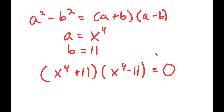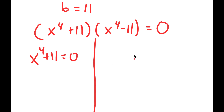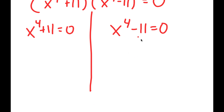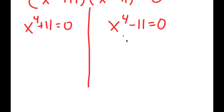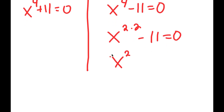From here I get two equations: x to the power of 4 plus 11 is equal to zero, and x to the power of 4 minus 11 is equal to zero. We are still not done yet, because to solve these equations people are going to think — just add or subtract 11 on both sides and take the fourth root. But we're going to do the same thing we did with our original equation. I'm going to rewrite x to the power of 4 as x to the power of 2 times 2, and rewrite that as x to the power of 2, to the power of 2.